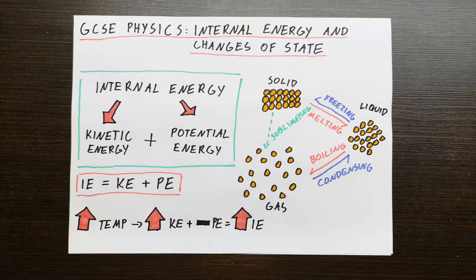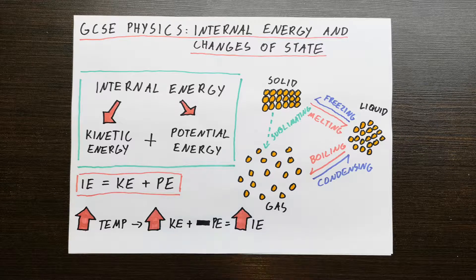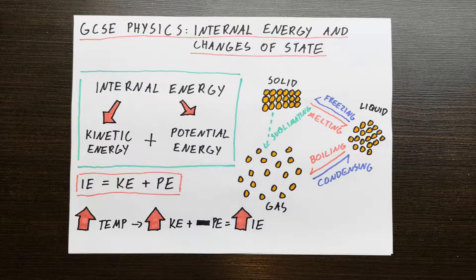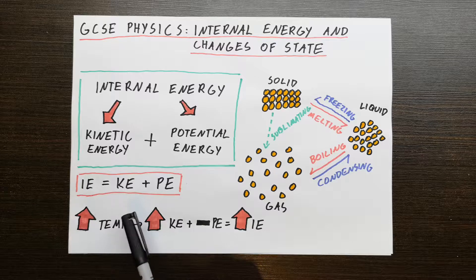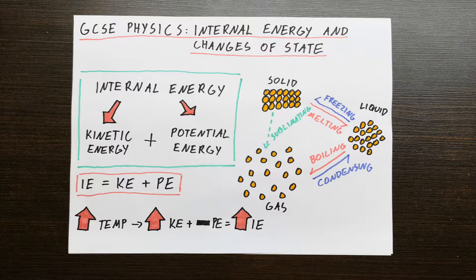The other type of energy is potential energy, which is slightly more complex. It's to do with their positions — where they are in relation to each other — and also how they are overcoming gravity. So that is potential energy. Together, kinetic energy and potential energy come together to form internal energy. Here's the equation: internal energy equals kinetic energy plus potential energy. Kinetic energy and potential energy form part of internal energy, so when you add them together, that gives you internal energy.